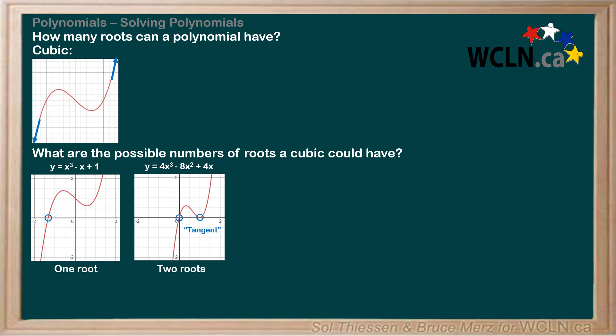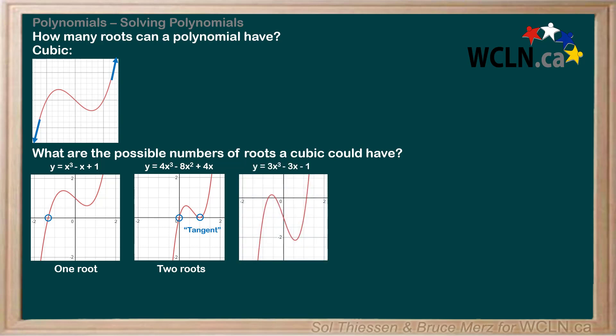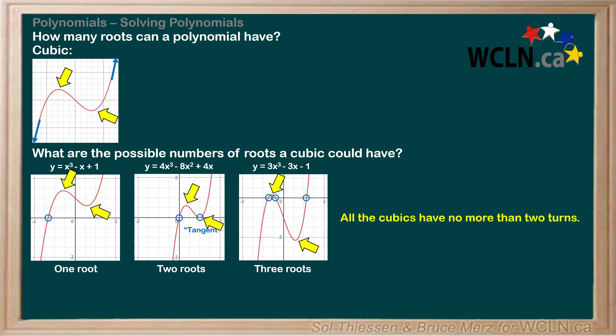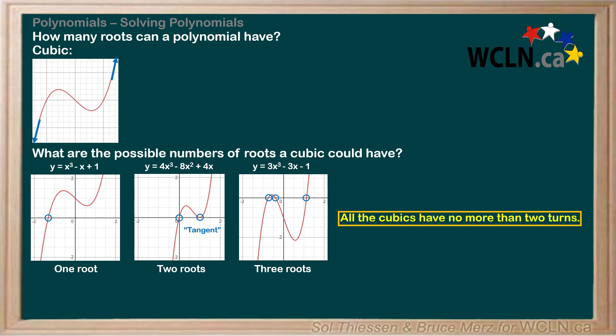Finally, if the cubic has a turn on either side of the x-axis, like in this graph of y equals 3x cubed minus 3x minus 1, the plot will cross the x-axis at three points, resulting in the cubic having three roots. Notice that in these examples all the cubics have no more than two turns. So a cubic, which is of degree 3, can have at most three roots and at least one root with a maximum of two turns.